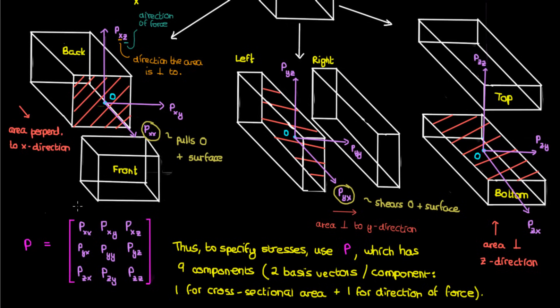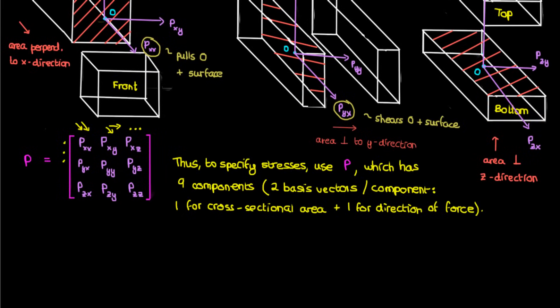So for instance, the component pxx corresponds to two basis vectors in the positive x direction, or two i vectors, while pxy corresponds to one basis vector in the x direction for the area and a basis vector in the y direction, or j vector, for the direction of the force. We can continue this logic for all the other components of P as well. For instance, pxz would be specified by a basis vector in the x direction for the area and a basis vector in the z direction for the force.